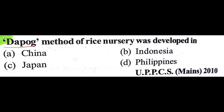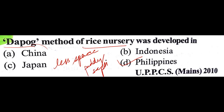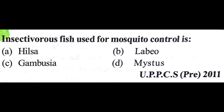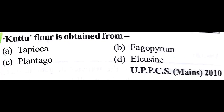The POGO method of rice nursery was developed in the Philippines. This method consumes very little space for planting paddy saplings, which can afterwards be used for plantation across acres of land. The first dwarf rice variety developed in India was D: Jaya. Insectivorous fish used for mosquito control is C: Gambusia. Kuttu flour is obtained from B: Fagopyrum.